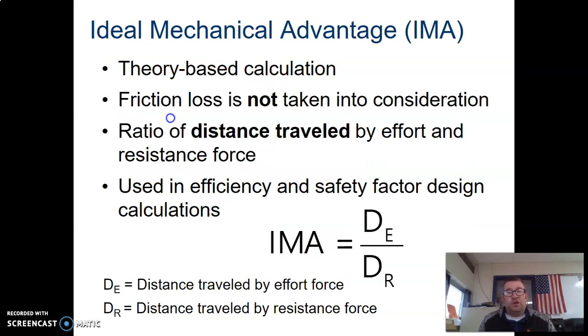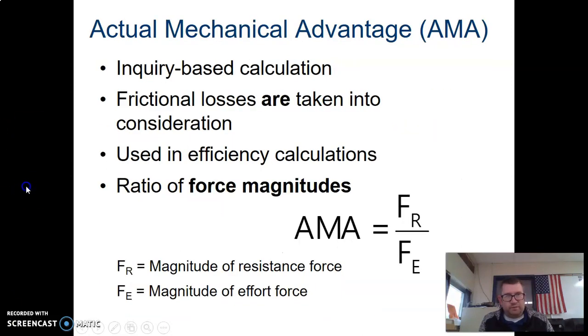Ideal mechanical advantage, as the name suggests, is theory-based. Friction loss is not taken into consideration, and it's the ratio of distance traveled by effort and resistance force. So IMA deals with distances. IMA equals DE divided by DR. I'm a DEER, you're going to be hearing that a lot as we discuss our simple machines.